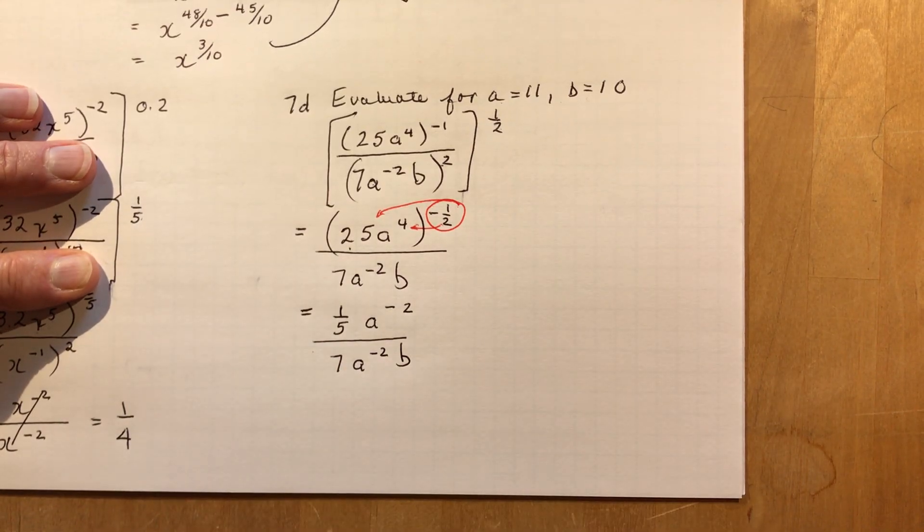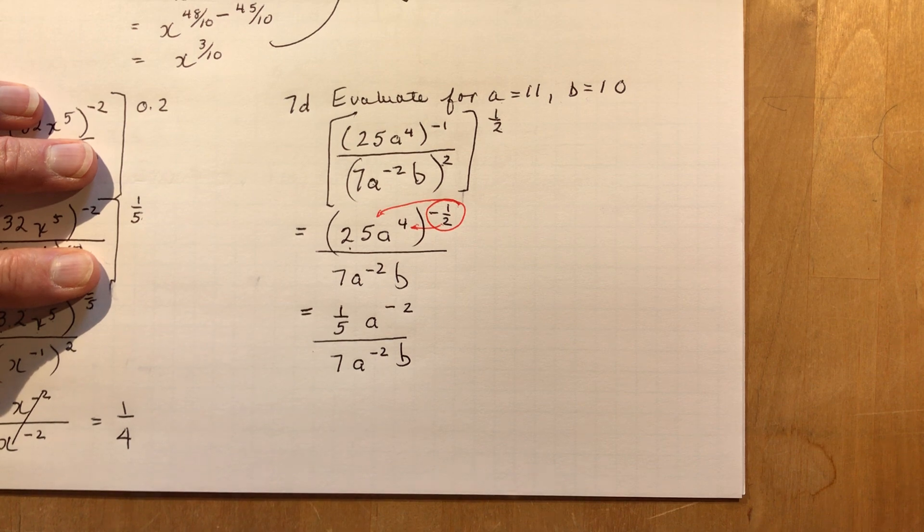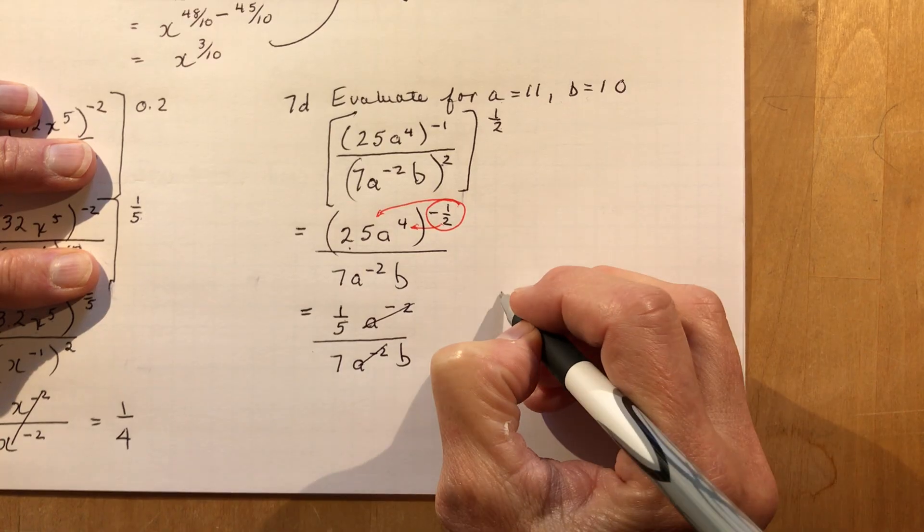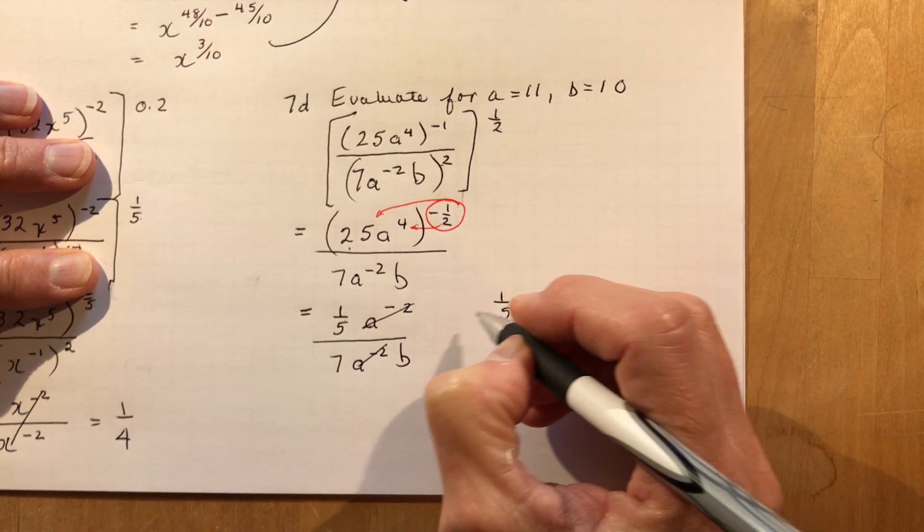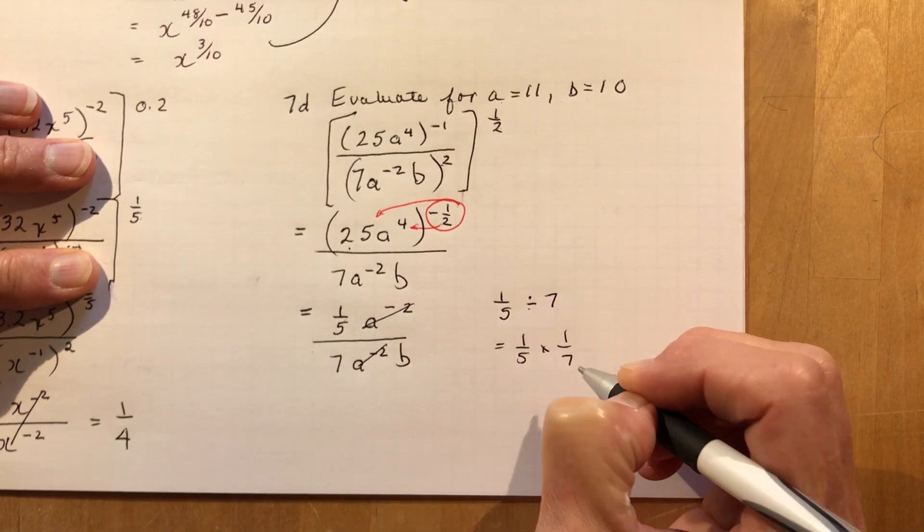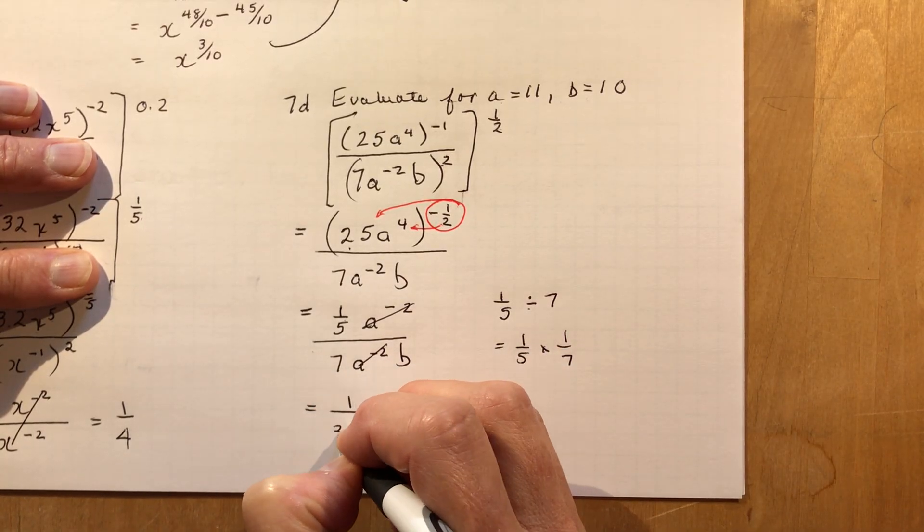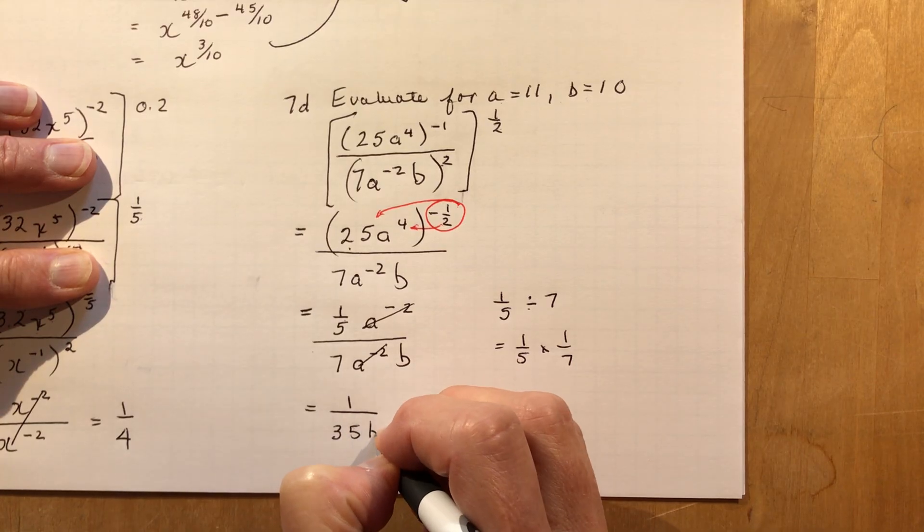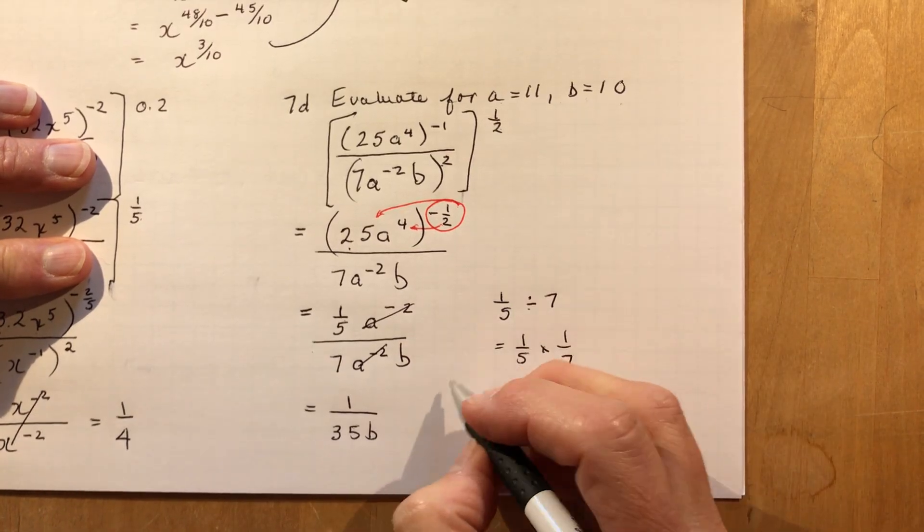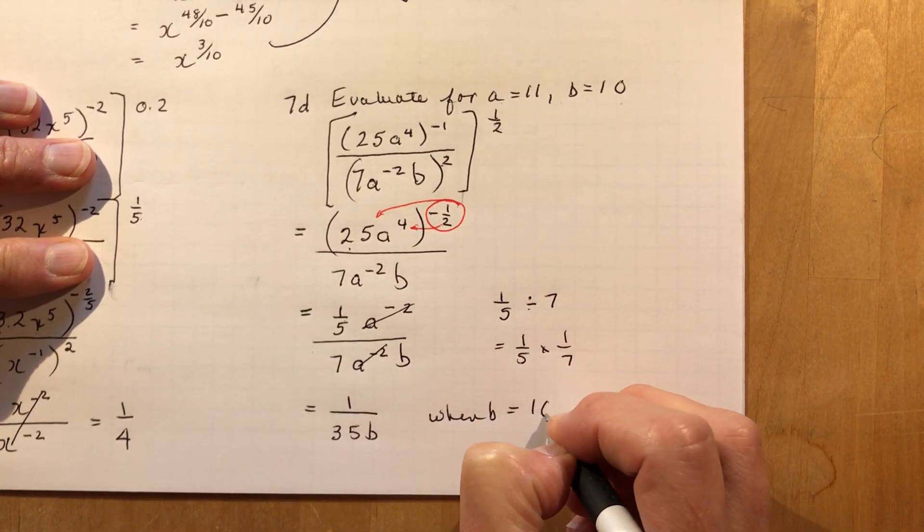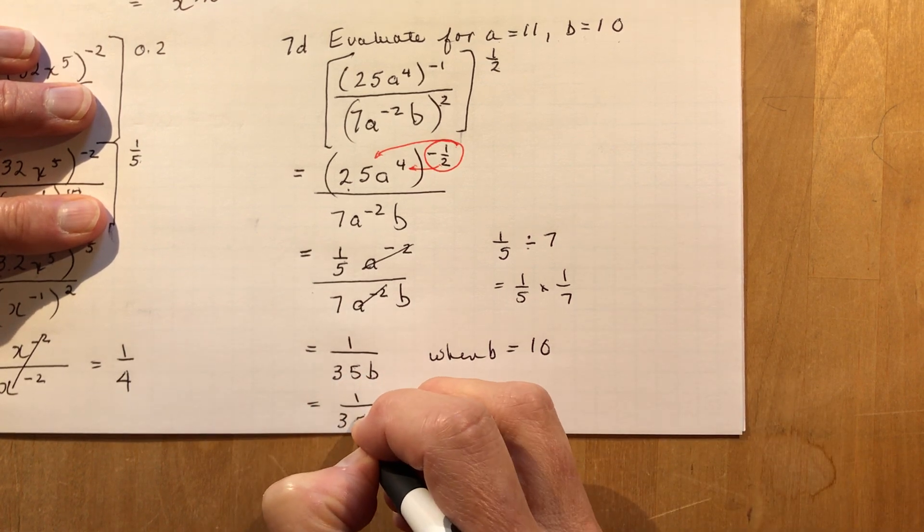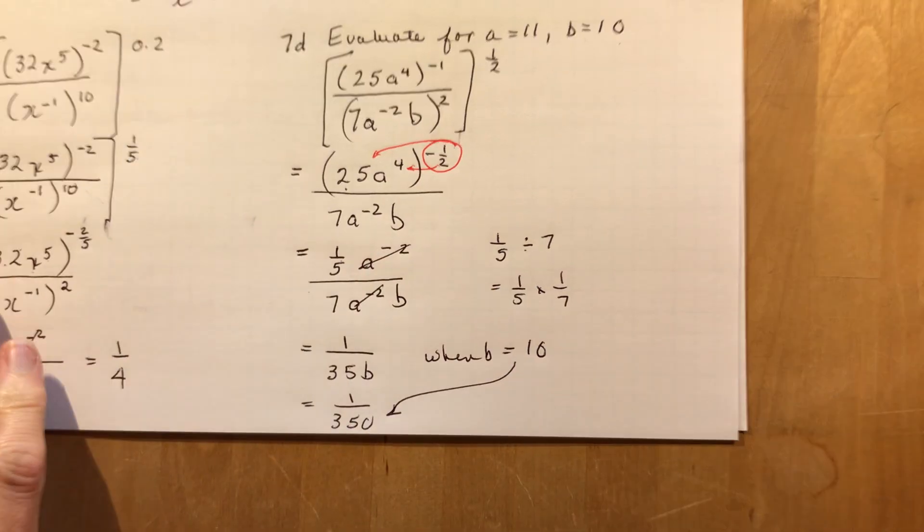7A to the minus 2 and B. Oh, A minus 2. Well the minus 2s cancel out. These ones are gone. And I have a fifth. Let's write that over here because this is where people get mixed up. 1/5 divided by 7 is 1/5 times 1 over 7, so that's just 1 over 35. And I still have a B, 1 over 35B. So now it's really easy to evaluate when B is 10. And when B equals 10, that leaves me with 1 over 350.